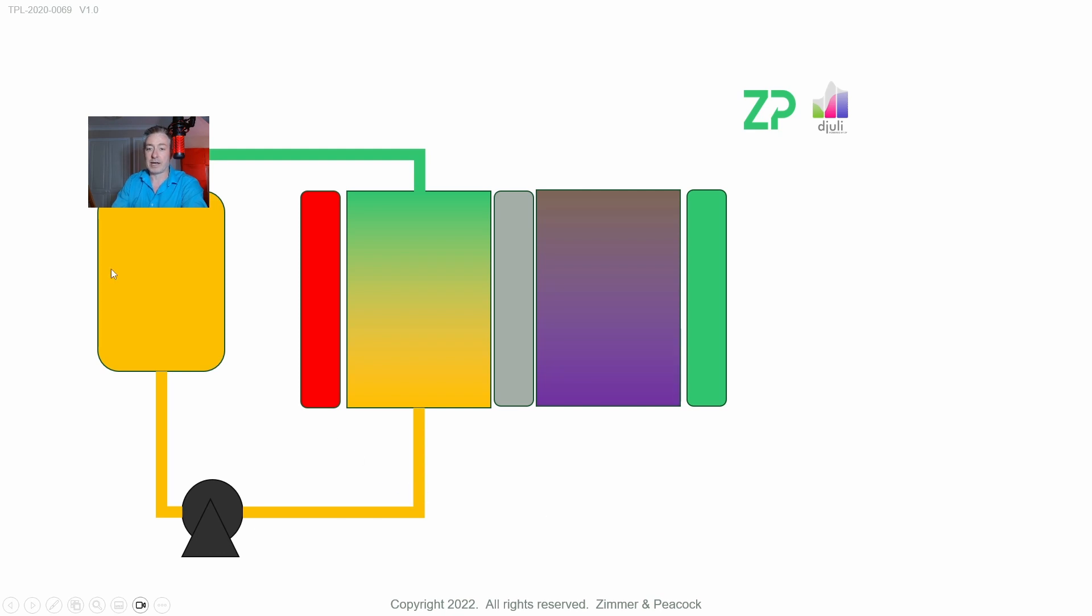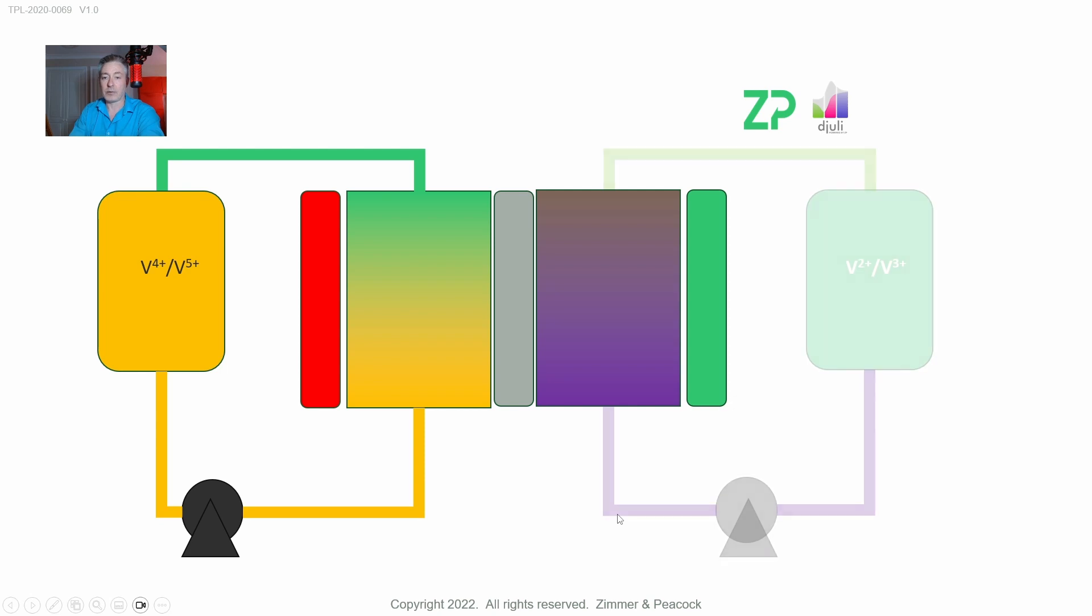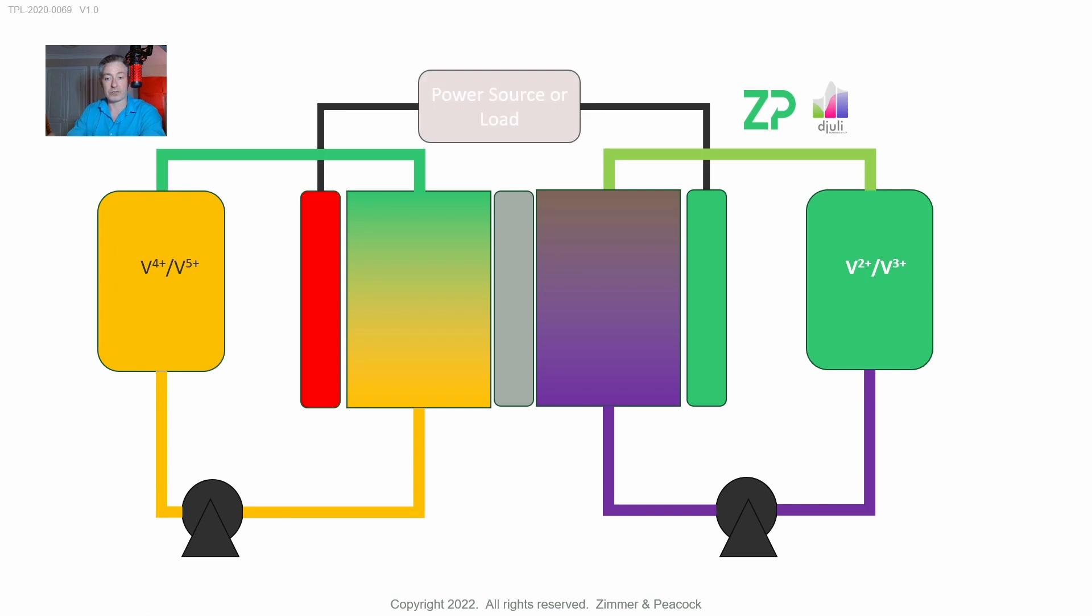We have two loops going on here. We have a pump and a reservoir or positive electrolyte tank, and we have another pump with another fluidic loop and a negative electrolyte tank. Here we put a power source or load.